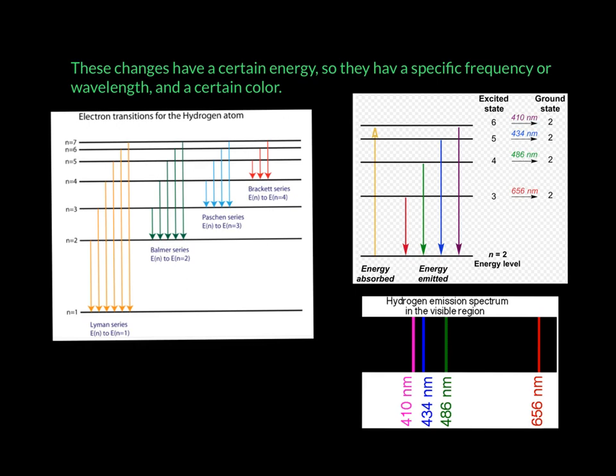So this is a more organized picture of that. This tries to give you all the possible transitions. So this first yellow series is when they're falling from n equal to 7 down to 1, the ground level. The second, this green series, is when they're falling from higher energy levels down to the second energy level. So all transitions are possible.